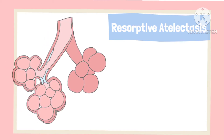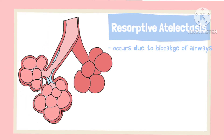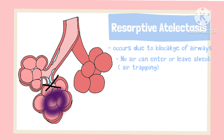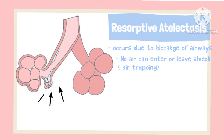The second type is resorptive or obstructive atelectasis. It occurs due to blockage or obstruction of the alveoli. Due to the blockage, no air can enter the alveoli, nor can the air inside leave. Some air gets trapped inside the alveoli, which then gets reabsorbed into the blood circulation, leaving an empty space that closes down without anything to keep it open.